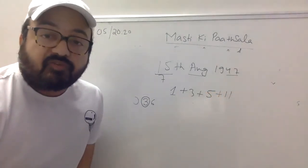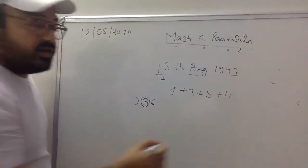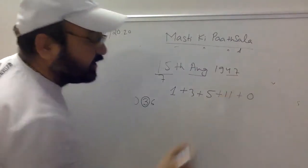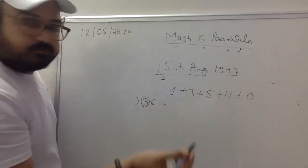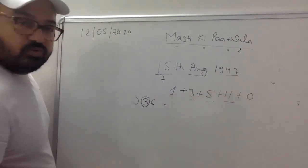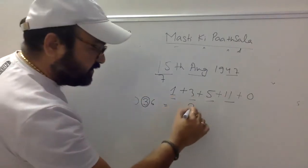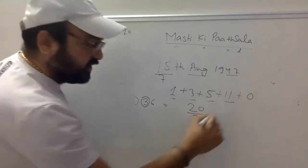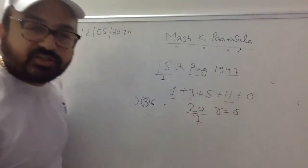1900 का code अभी अभी बताया — 0. अब सब add करो: date remainder 1 + month code 3 + year remainder 5 + leap year quotient 11 + century code 0 = 20. फिर 7 से divide करो, remainder देखो: 6.